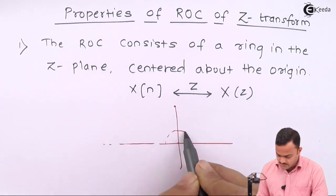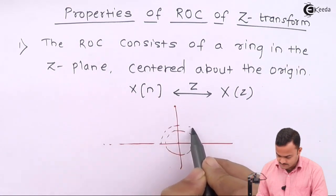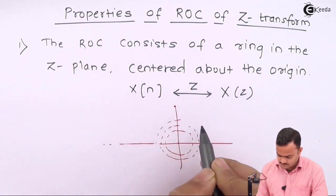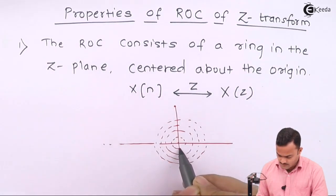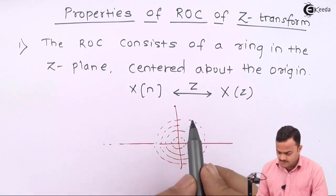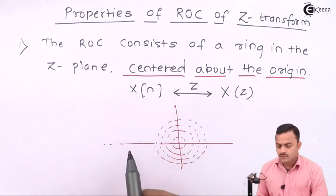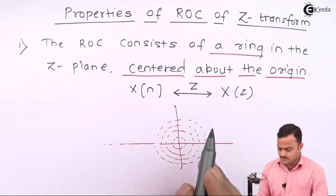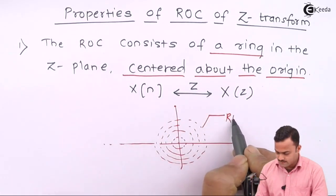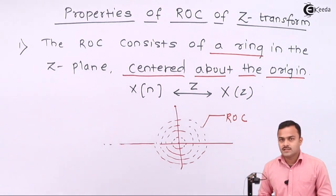So the ROC consists of rings like this, and most importantly it is centered about the origin. A ring centered about the origin is nothing but the region of convergence for the Z-transform — those values of Z for which X(z) is finite.